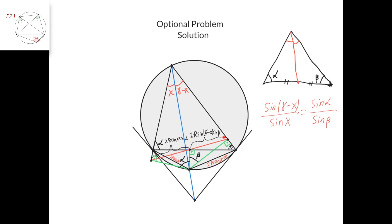From this cyclic quadrilateral, if this angle is beta, then this angle is beta. And from this cyclic quadrilateral, if this angle is alpha, then this angle is 180 minus alpha, so this angle is alpha. Now we can apply the law of sines for this triangle, and we get this side equals the diameter of this circle — which is 2r sine of (gamma minus x) — times sine of beta. And applying the law of sines to this triangle, this segment equals the diameter of this circle — which is 2r sine of x — times sine of alpha.